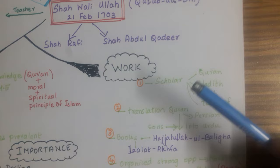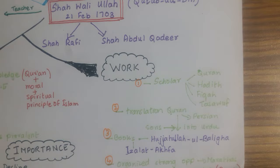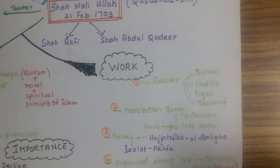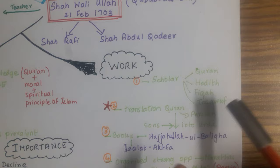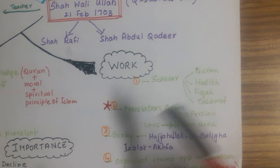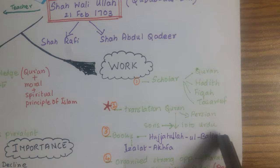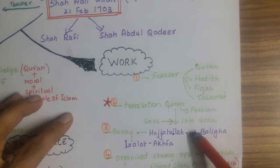Now, his work — what did he do to address these problems? He was a scholar with deep understanding of the Quran, covering fiqh, ahadith, and tasawwuf. Most importantly, he translated the Quran from Arabic into Persian — make a star here, it's the most important thing. Although he received a lot of opposition, it proved to be valuable work. Later, his sons also translated the Quran into Urdu, and it became widespread, allowing the masses to read and understand it.